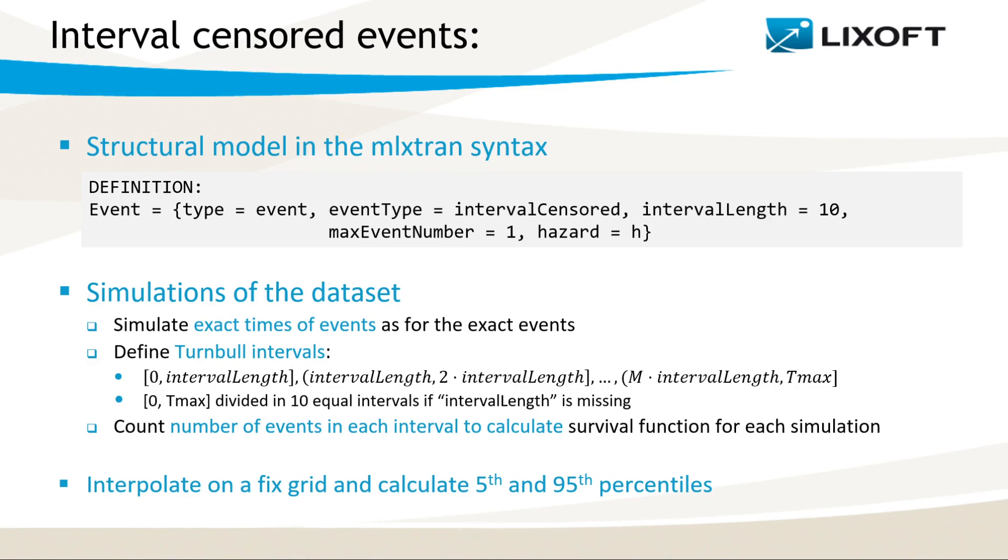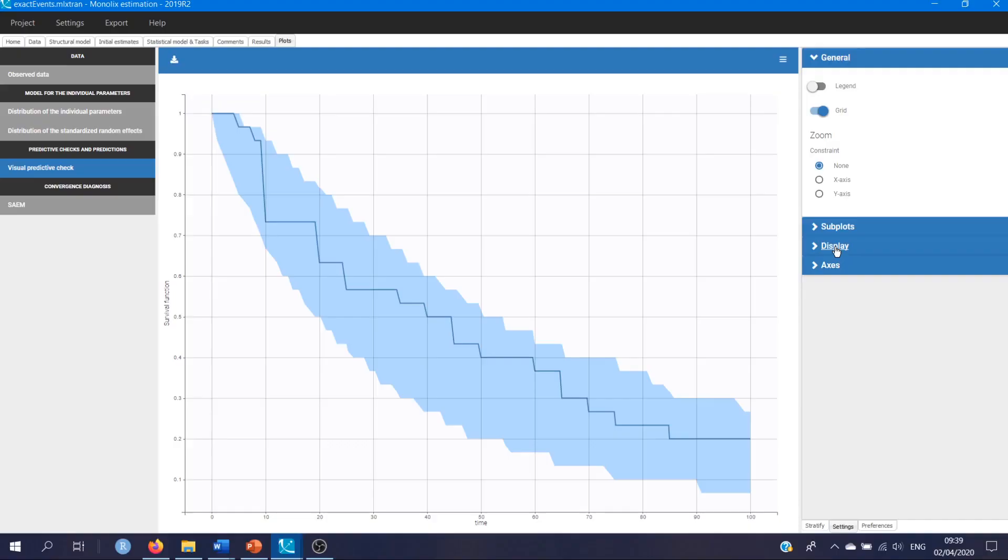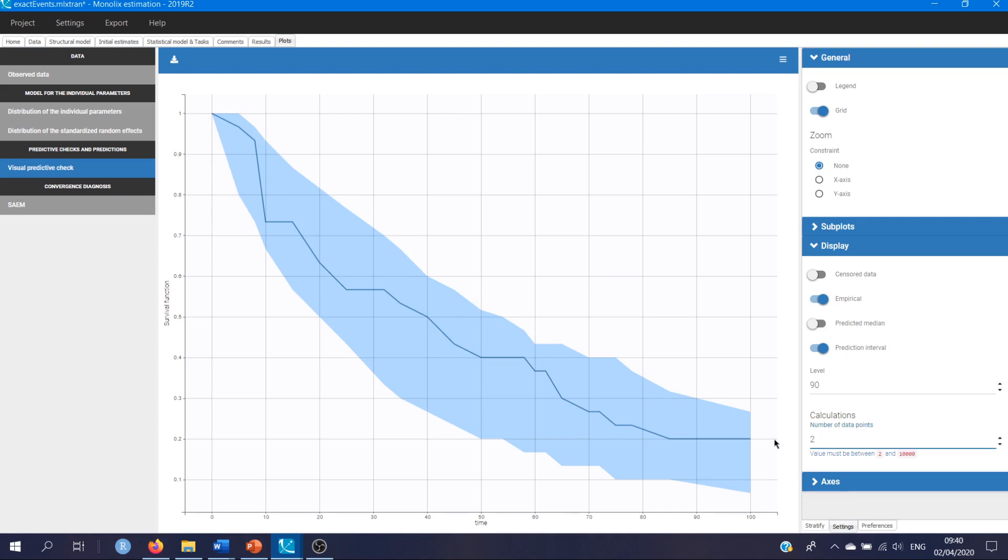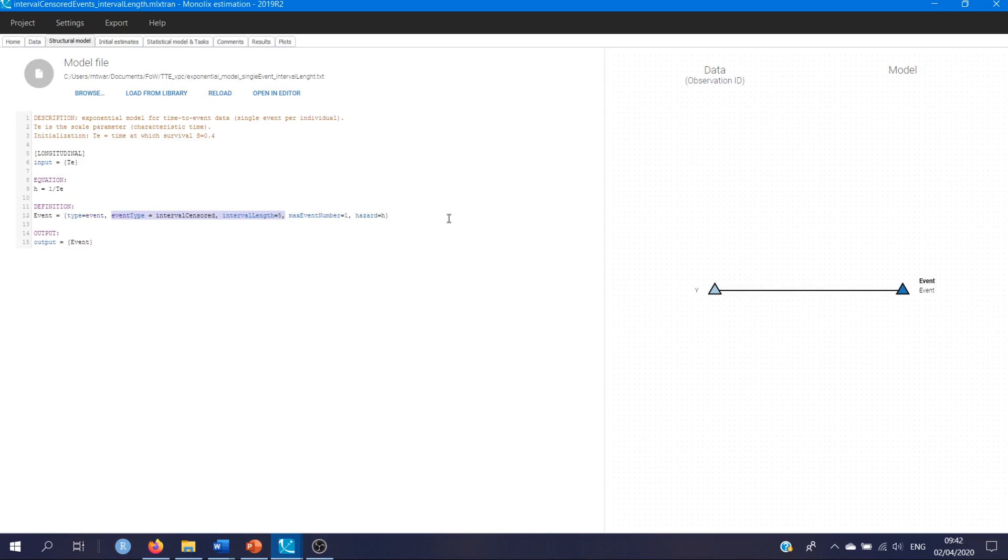Now, let's look at VPC plots in Monolix. First, let's consider exactly observed events. This dataset I'm using contains 30 individuals and I used a time-to-event model with constant hazard function. By default, the empirical survival function is linearly approximated on a grid with 100 uniformly distributed points, superposed with time points from the dataset. We can see if I select only two points here, I have only the beginning and end of the observation period, plus points from the dataset. Increasing number of points increases the accuracy of the approximation.